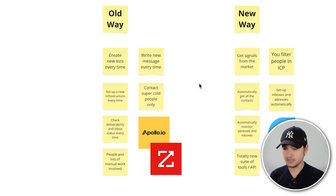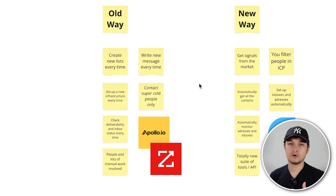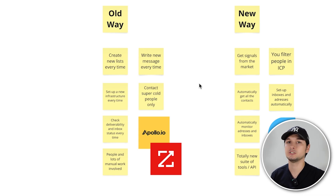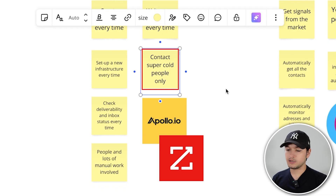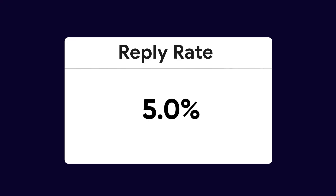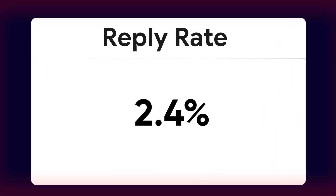The old way is basically creating new lists every time from scratch. You create a list of people, get the information, get the email, write messages every time, and have to set up new infrastructure every time — setting up domains and addresses that you then burn and have to replace. You only contact people that are super cold, and in 2025 outbound is getting tougher and reply rates are going down.